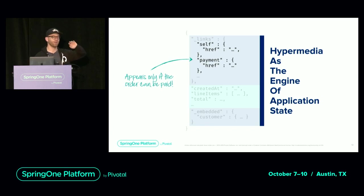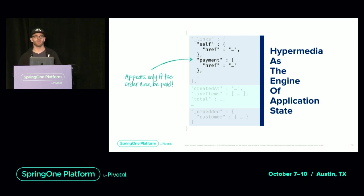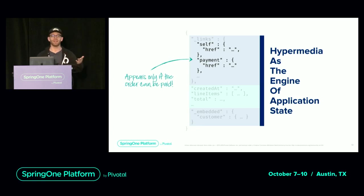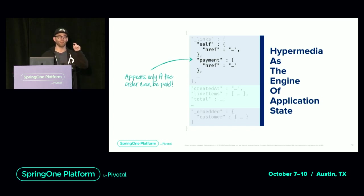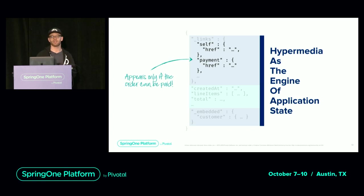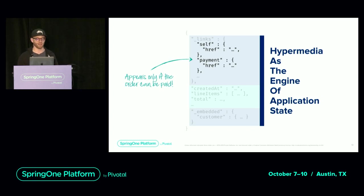This is the infamous hypermedia as the engine of application state — we're trying to get the client to only follow the link relations and make sense of them. If I'm coming back to the example of browsing a web page, the difference is there is a human being sitting in front of a screen knowing what 'add to cart' actually means. We need to discover how machines can make sense of something like 'payment' — to a machine, it's just an arbitrary string and we have to put some semantics behind it.